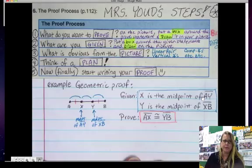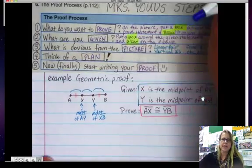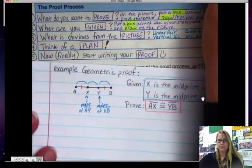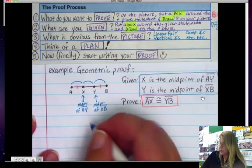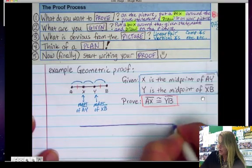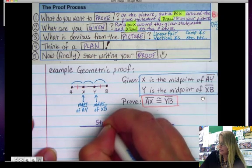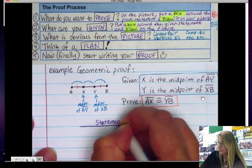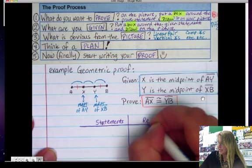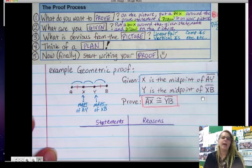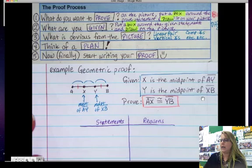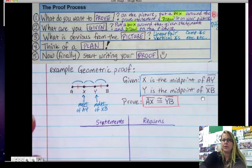So here's how we write our proof. We're going to draw a two-column proof. And we're going to write statements here. And we're going to write reasons here. And usually your first statement is going to be all of your givens, usually. Not always, but usually that's the first good place to start.